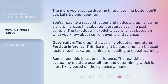The more you practice drawing inferences, the better you'll get. Let's try one together. You're reading a research paper and notice a graph showing a sharp increase in global temperatures over the past century. The text doesn't explicitly say why, but based on what you know about current events and science: Observation — the graph shows rising global temperatures. Possible inference — this rise might be due to human-induced factors, such as carbon emissions, leading to global warming. Remember, this is just one inference. The real skill is in evaluating multiple possibilities and determining which is most likely based on the evidence at hand.